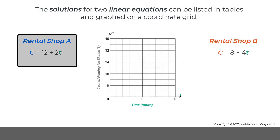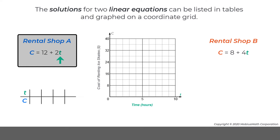Shop A charges an upfront fee of $12 and $2 for every hour that the ice skates are rented. The cost C of renting skates from Shop A for T hours is represented by the equation C equals 12 plus 2T.